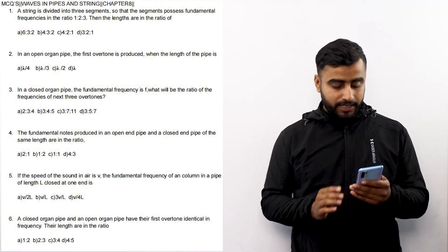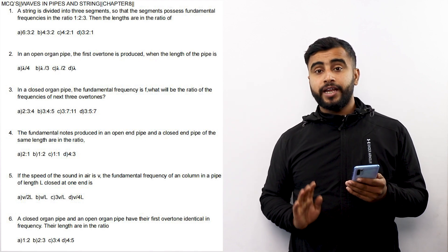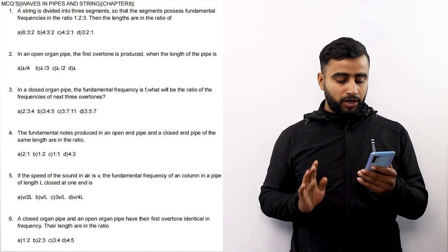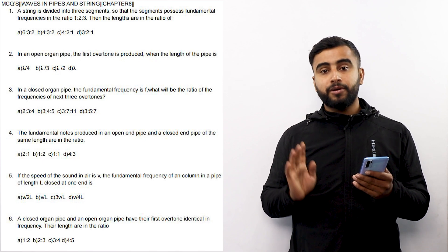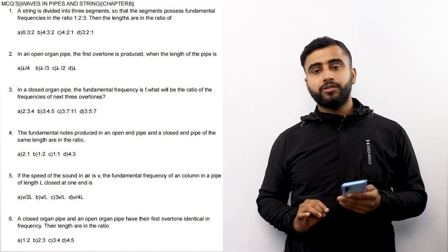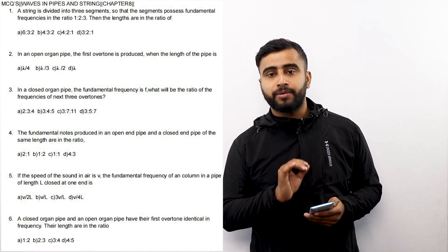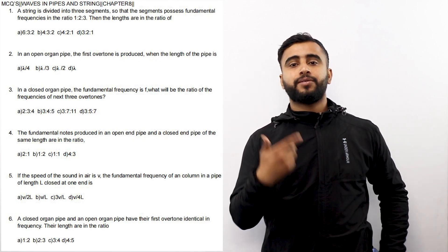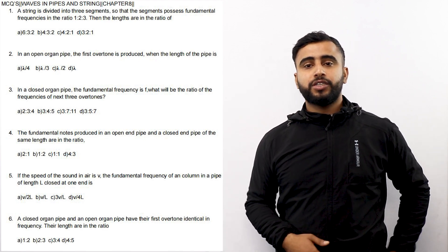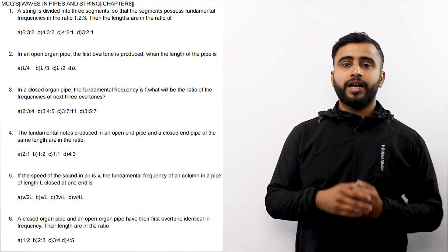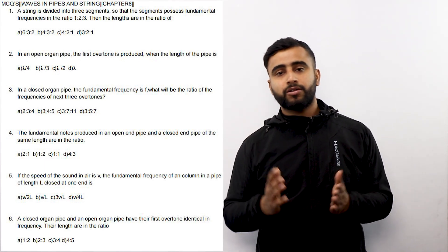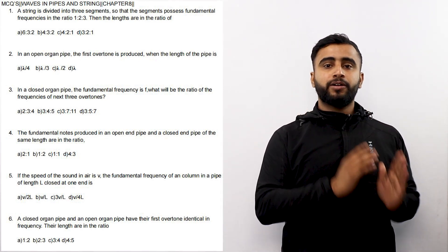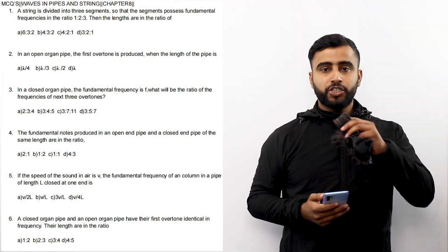Question 5: If the speed of sound in air is V, the fundamental frequency of a column in a pipe of length L closed at one end is? As we know, the fundamental frequency for a closed organ pipe is V by 4L, and for an open organ pipe it is V by 2L.